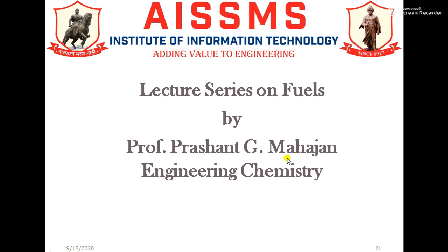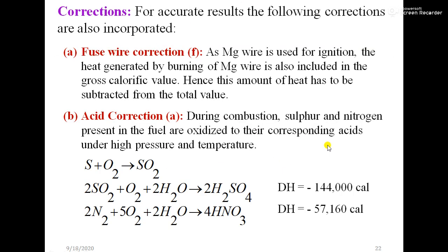Today we are going to see correction formula of bomb calorimeter. There are some corrections in the bomb calorimeter. You can see here for accurate results the following corrections are also incorporated. First is fuse wire correction, that is f.